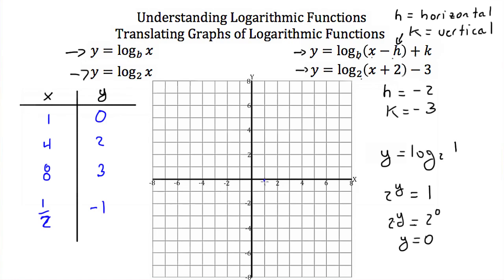Plotting those points — (1, 0), (4, 2), (8, 3), and (one-half, negative 1) — and connecting them with a smooth curve, remembering that the y-axis is an asymptote because x can never equal 0, gives us the graph of y equals the log base 2 of x. But we want to graph y equals the log base 2 of (x plus 2) minus 3, which has h equals negative 2 and k equals negative 3. That means every point on this graph is moved left 2 units and down 3 units.